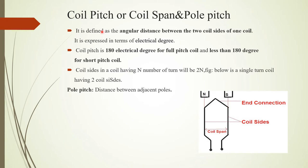First, we will discuss what is meant by coil pitch or coil span and pole pitch. Here you can see a coil wound like this, and here you can see two poles — north and south poles. Coil span is nothing but the distance between two adjacent coil sides of a coil. This is one coil side and this is the other coil side, opposite to the first. The distance between these adjacent coil sides of a single coil is known as coil span.